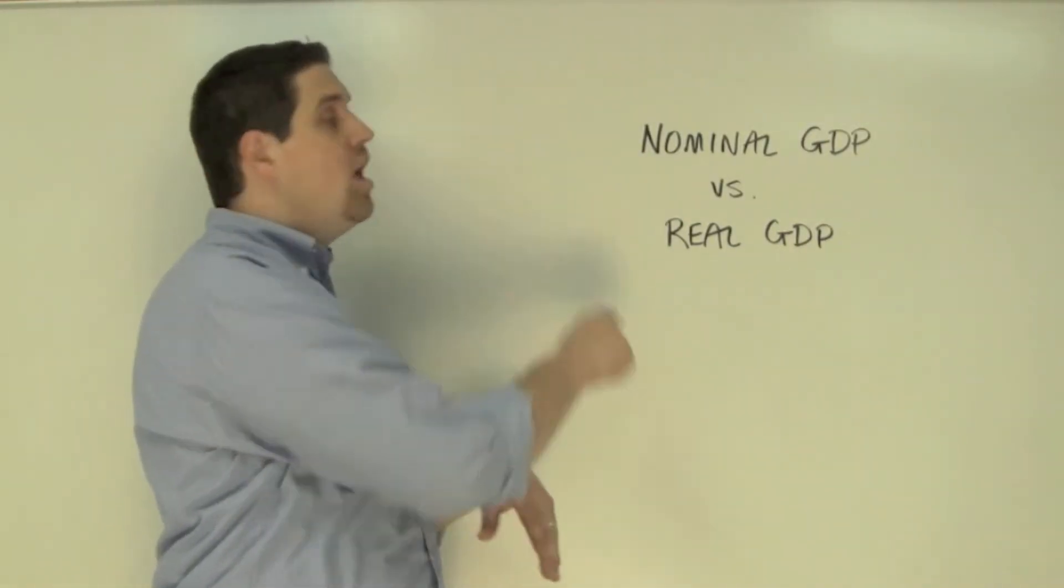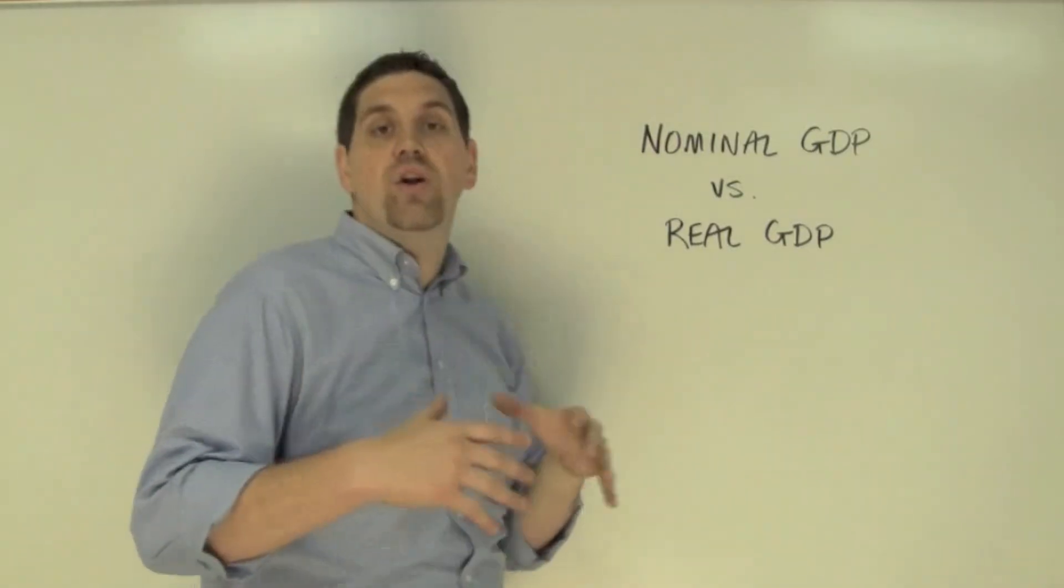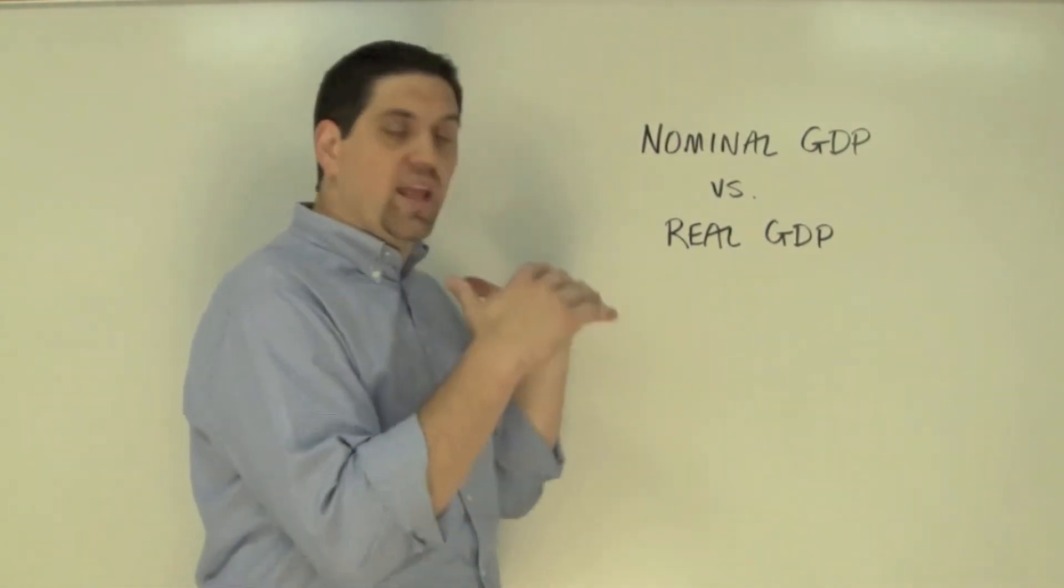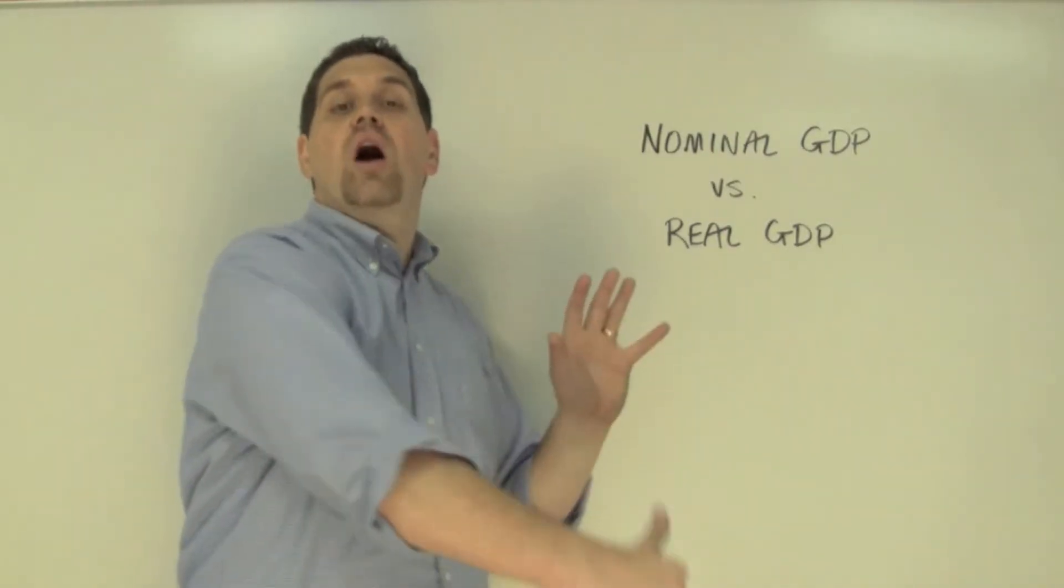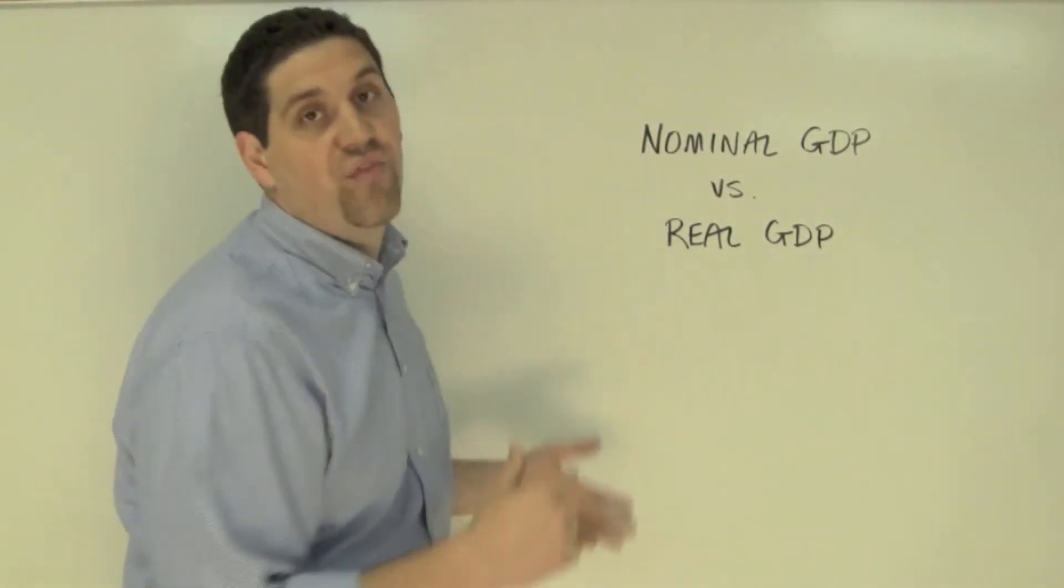It's the same thing for GDP. The nominal GDP is expressed in current dollars. It's the value of the stuff we're producing in a given year in today's money. Real GDP is the value of the stuff we're producing based on a base year price adjusted for inflation.